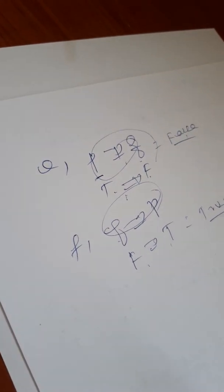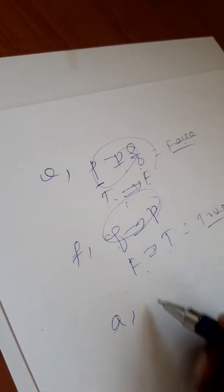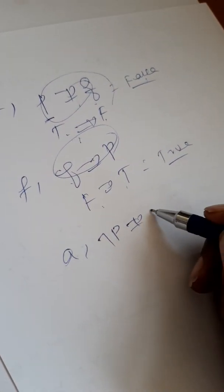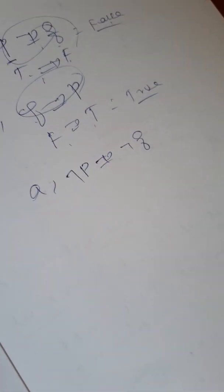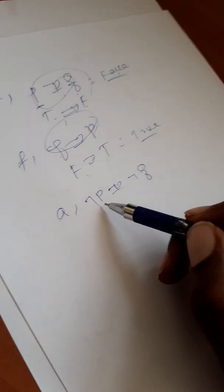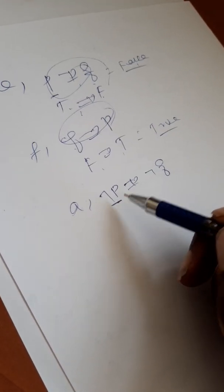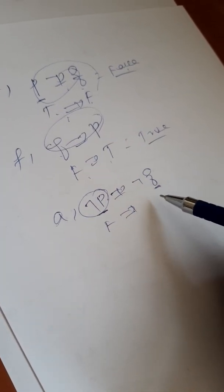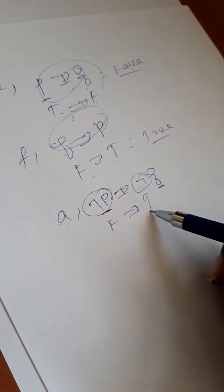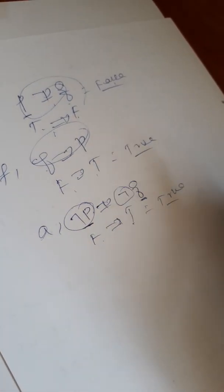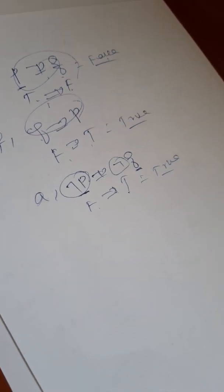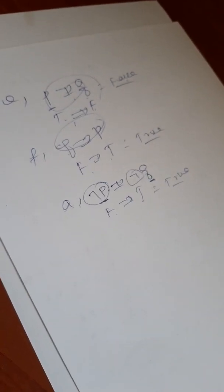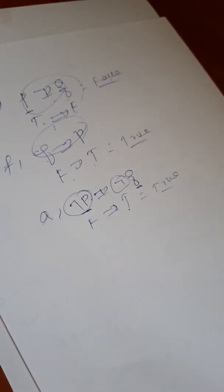For the negation of p implies the negation of q: the negation of p is false (since p is true), and the negation of q is true (since q is false). So false implies true — by implication, that is true. The truth value is true.